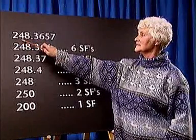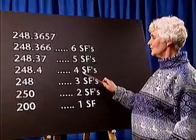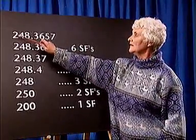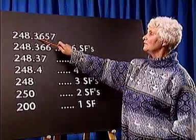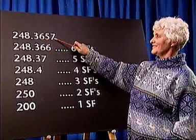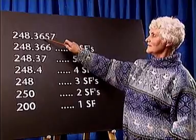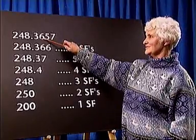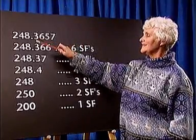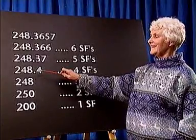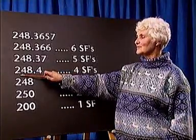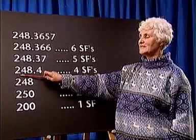If we approximate this number to four significant figures, we count one, two, three, four figures and then discard the rest of the digits. Because the first digit to be discarded is more than five, three is rounded up to four. The answer to four significant figures is 248.4.